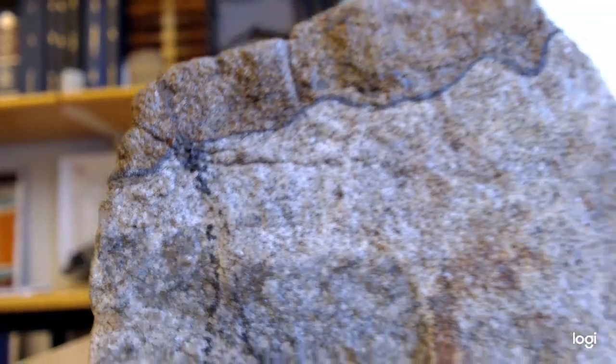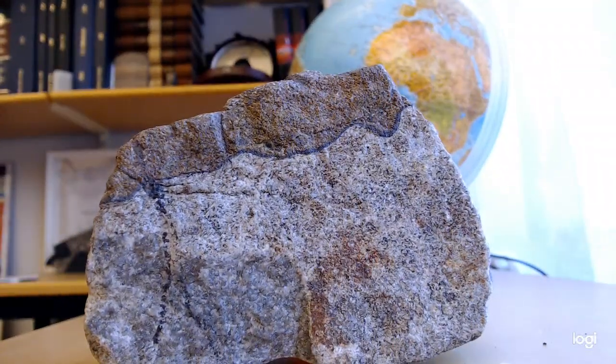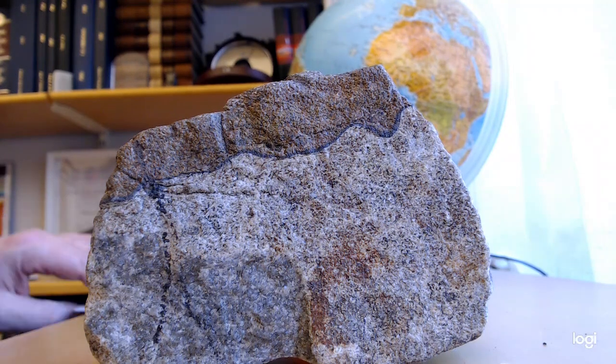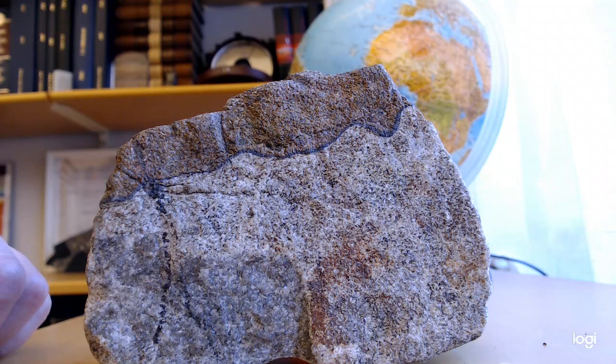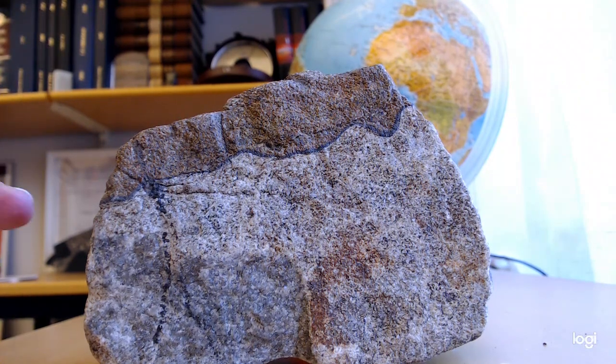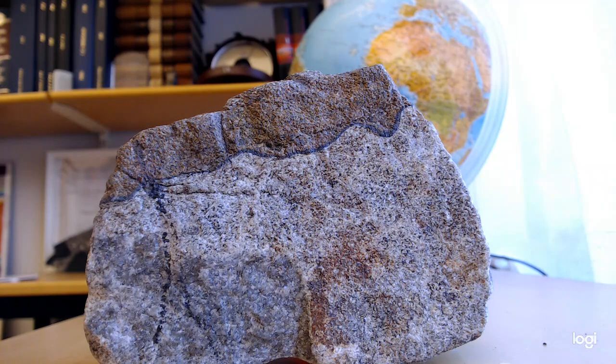Much of the feldspar is actually quite pervasive in the groundmass down here. We looked at some thin sections in class. There is some cumulative feldspar but there is also a groundmass poikilitic feldspar, plagioclase, that may enclose portions of this.